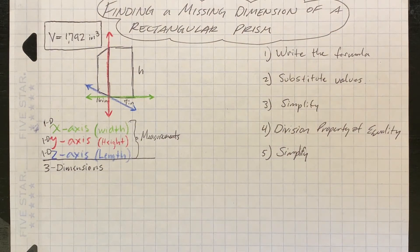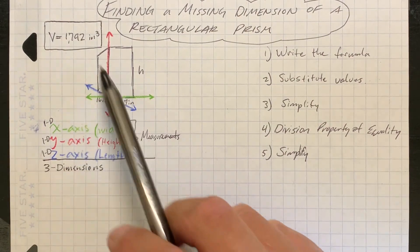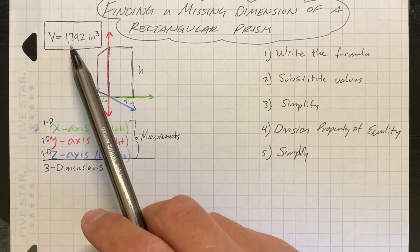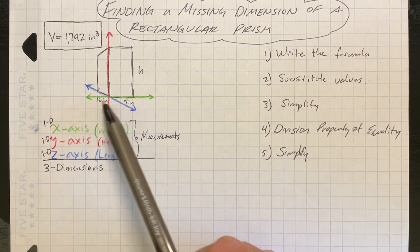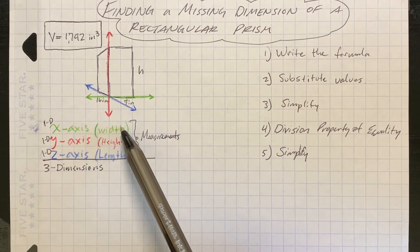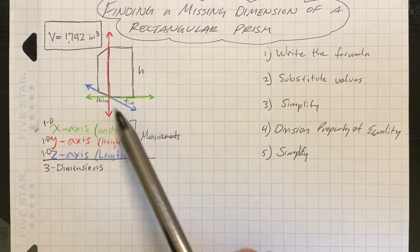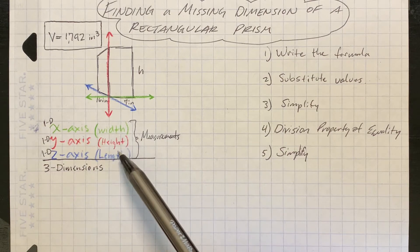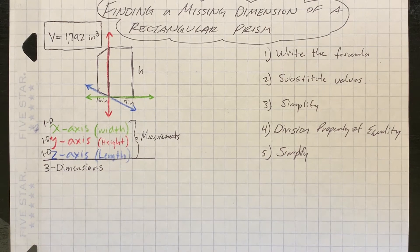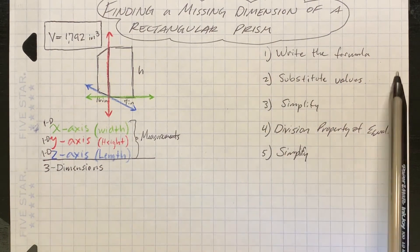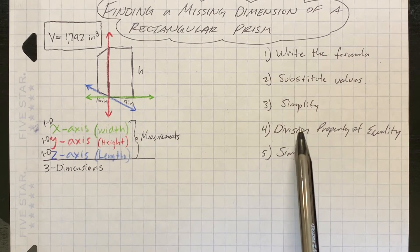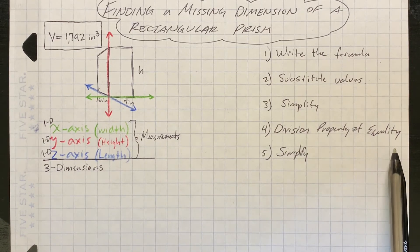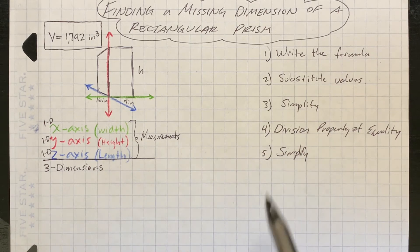For the last example, we're going to find a missing dimension of a rectangular prism. We already know the total volume is 1,792 inches cubed. The three dimensions are the height (y-axis), the width (x-axis), and the length/depth (z-axis). The steps are: write the formula, substitute the values, simplify, use the division property of equality to find the missing value, and then simplify again.